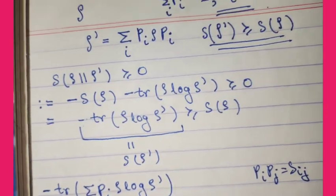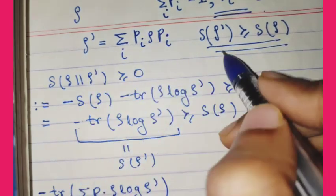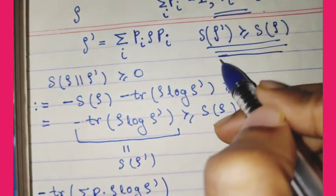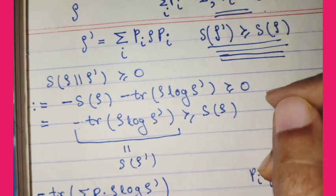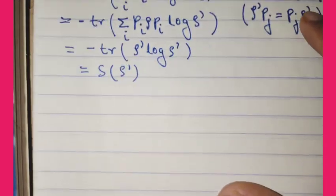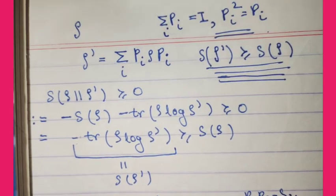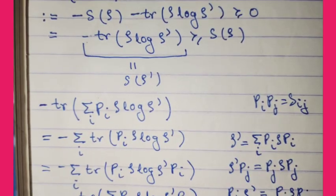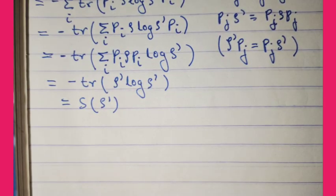Hence we have shown that non-selective projective measurement increases entropy — it introduces randomness into the system. That's all for this video. In the next video we will be proving the concavity of the entropy.